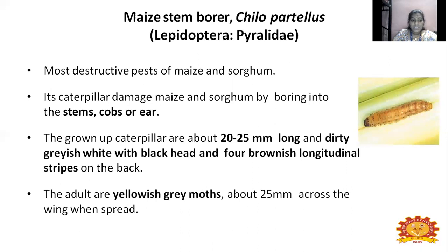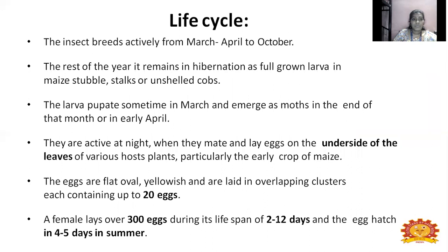The adult is a yellowish gray moth, about 25 mm when wings are expanded. The insect breeds very actively from March and April up to October. During this season, their breeding activity is very high. The rest of the year, the stem borer remains in hibernation — either in maize stubbles, stalks, or on unshelled cobs after harvest.